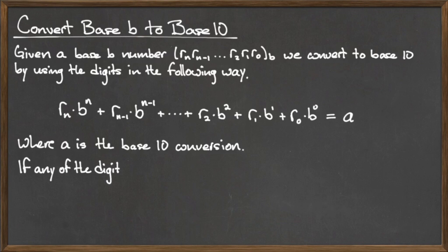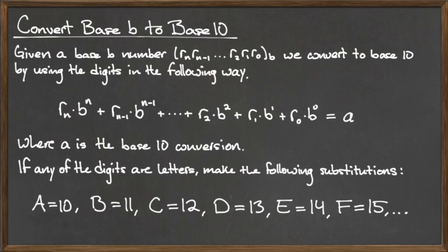We continue this process until we get to the last digit, r sub n, which we multiply by the base B to the nth power. We then add all of these quantities together, simplifying exponents, and the number that remains is the base 10 representation of the base B number.